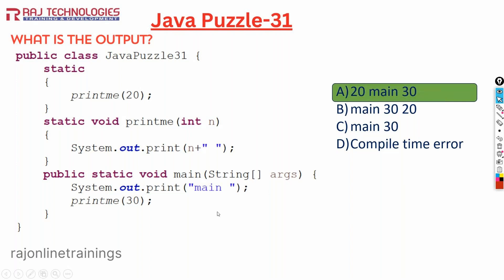The point to remember from this program: whenever we run a Java application, before entering the main method, the class gets loaded into memory. Once loaded, it enters the static block first, and after the static block, only then it enters the main method. That is the order of execution. Please subscribe, like, and share. Thank you.